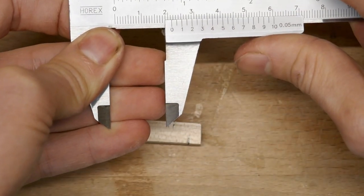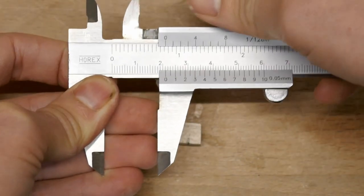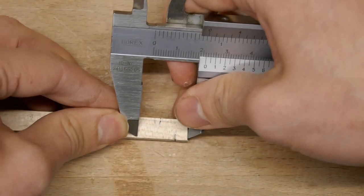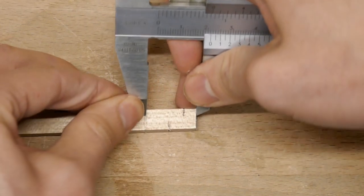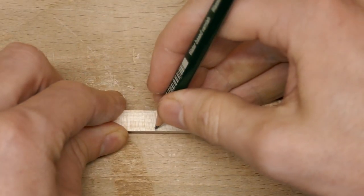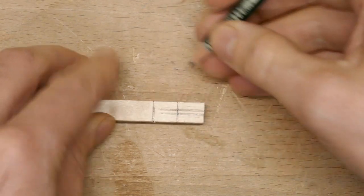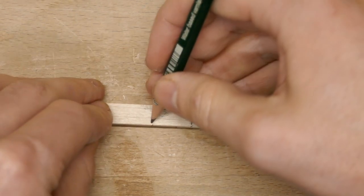We'll set the calipers to 21, make that, and make a mark around the entire blank. And this mark is just for reference, we'll probably end up cutting it in a slightly different place, based on how the rest of the chien looks.